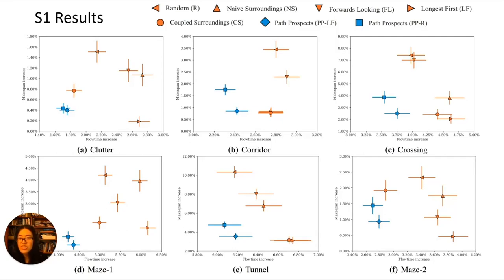It's important to note that makespan and flow time in general demonstrate a pairwise Pareto-optimal structure and cannot be simultaneously optimised. Our heuristic is shown in blue: the square represents tie-breaking randomly and the diamond represents tie-breaking using longest first. Both sit on the empirical Pareto front, low in both makespan and flow time dimensions.